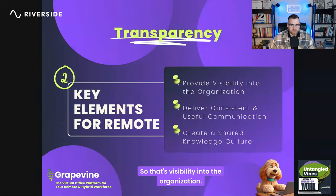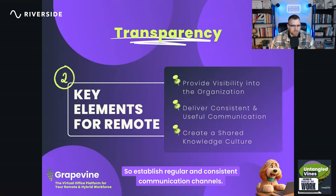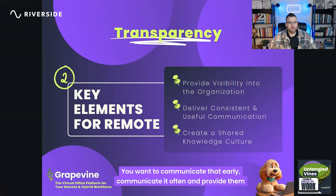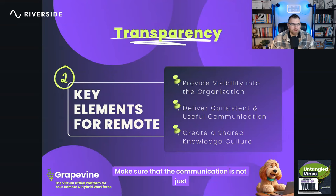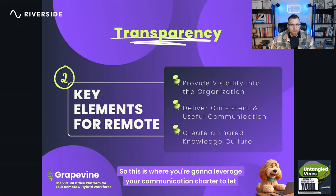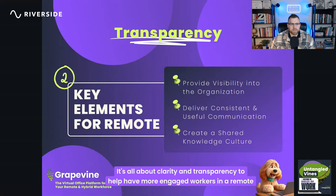The second element is delivering consistent and useful — keyword useful — communication. Establish regular communication channels including updates on projects, company news, and any changes that may impact the team. Communicate early, communicate often, and provide updates. Make sure communication is not just frequent but also relevant and valuable. Leverage your communication charter to let employees know where to go to learn more or get the fastest response.